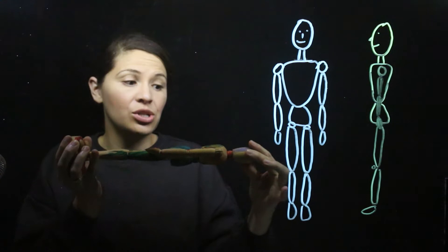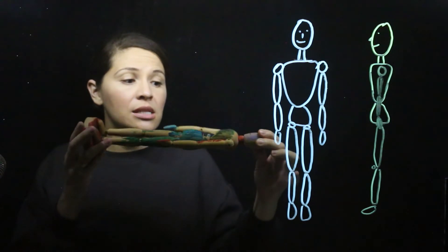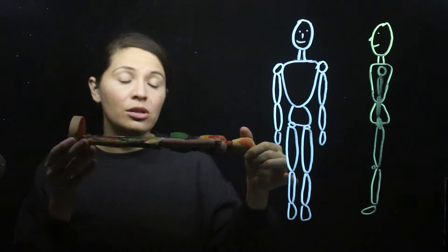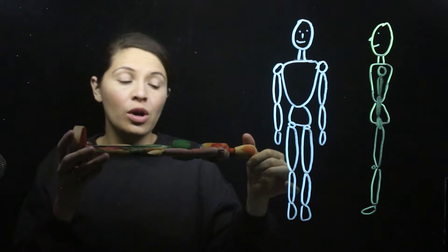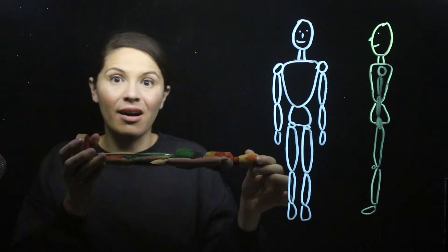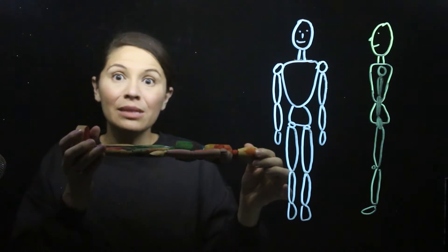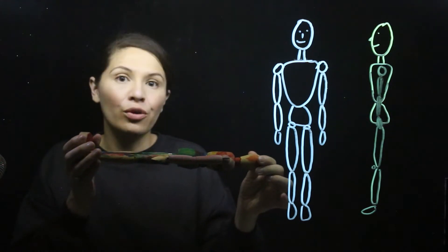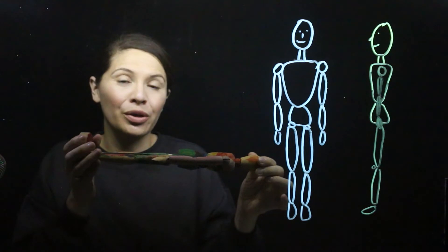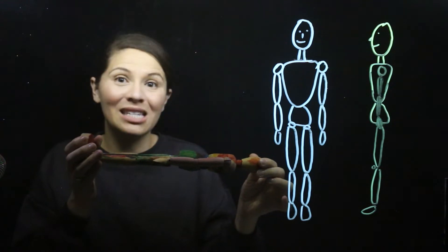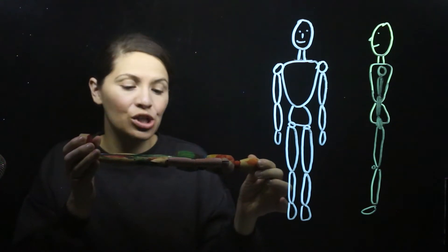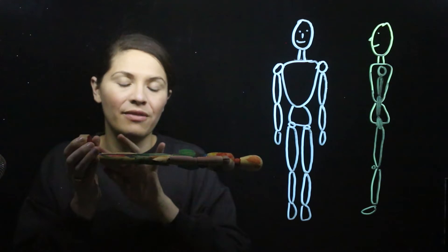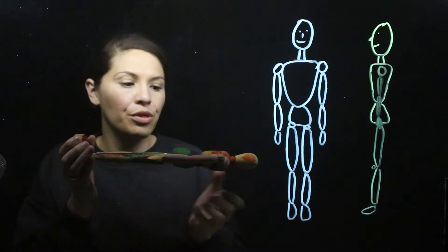Another common position is face down — face towards the floor and back towards the sky. This position is called the prone position, and we would still refer to our anatomical locations in reference to the anatomical position. So the pelvis is still above the feet and so forth.